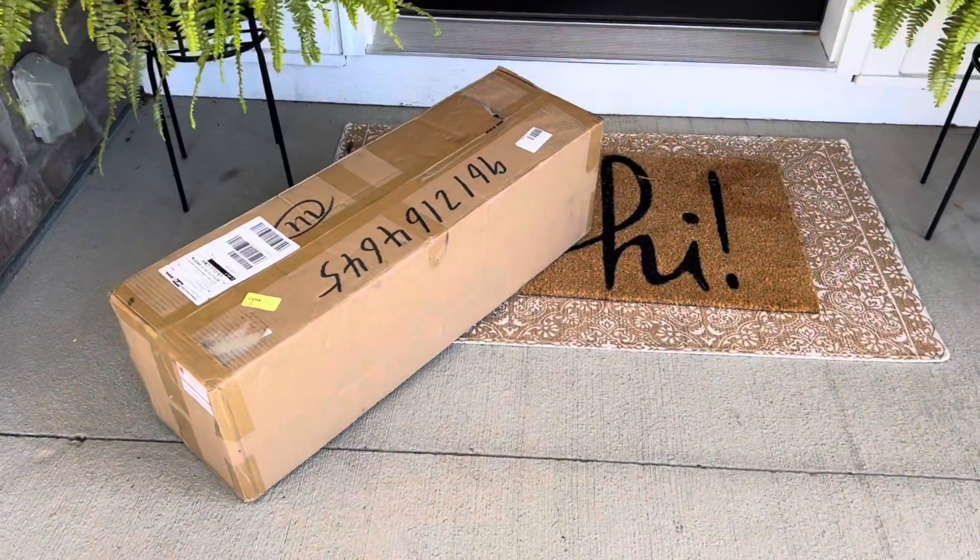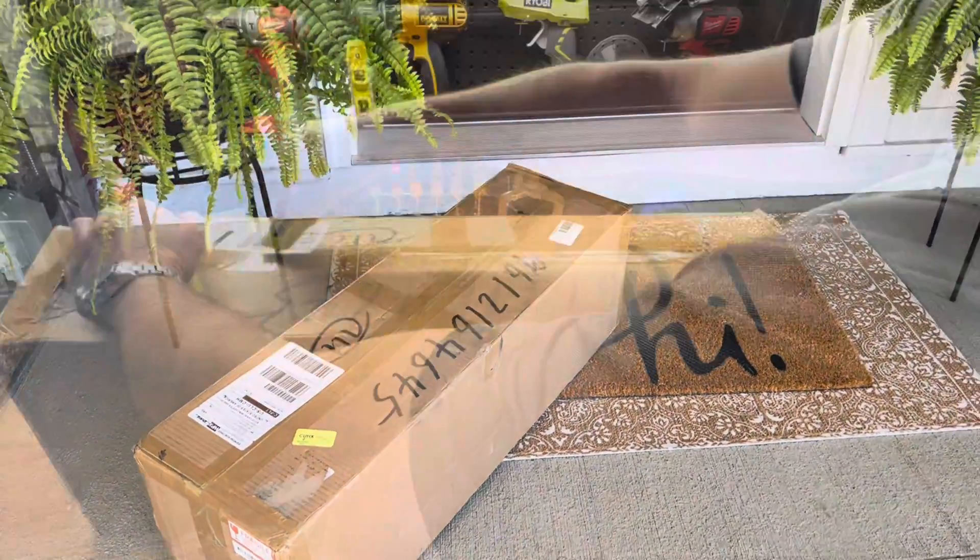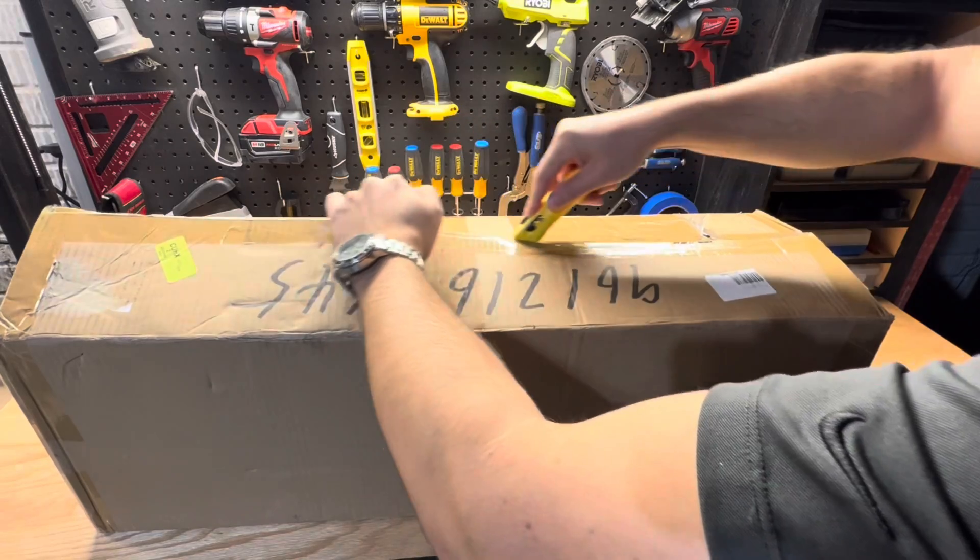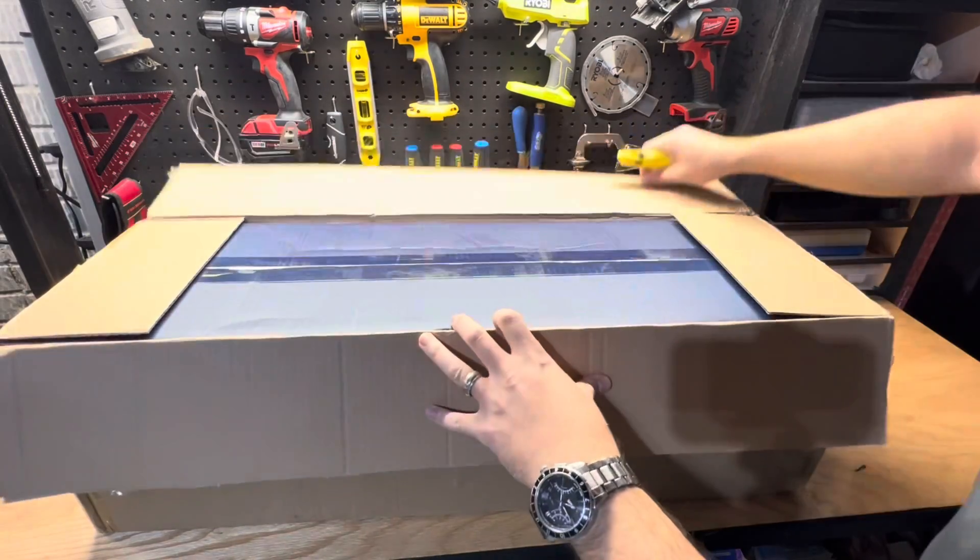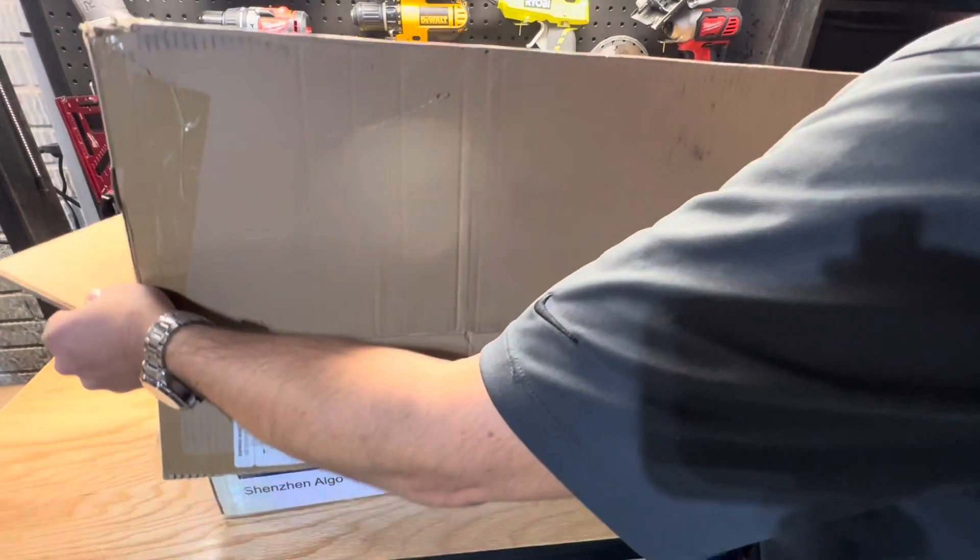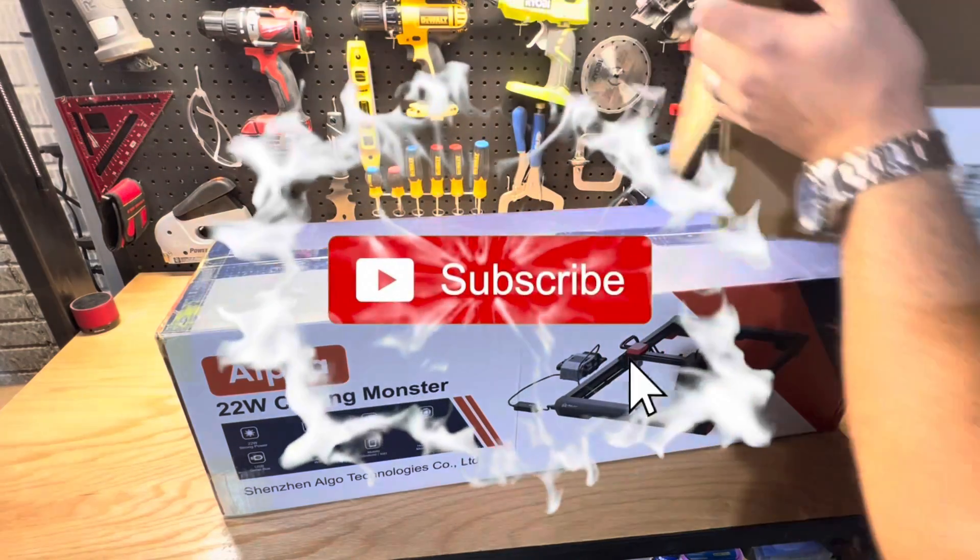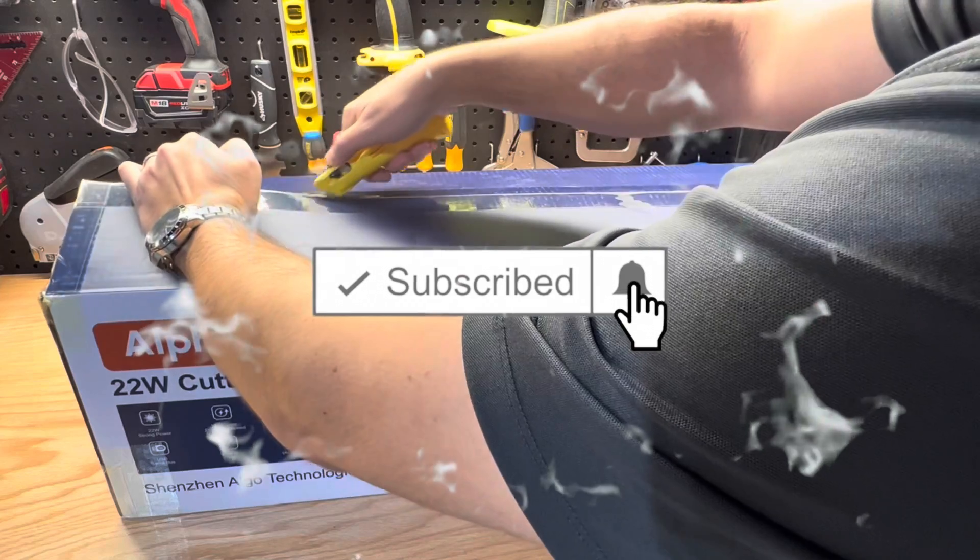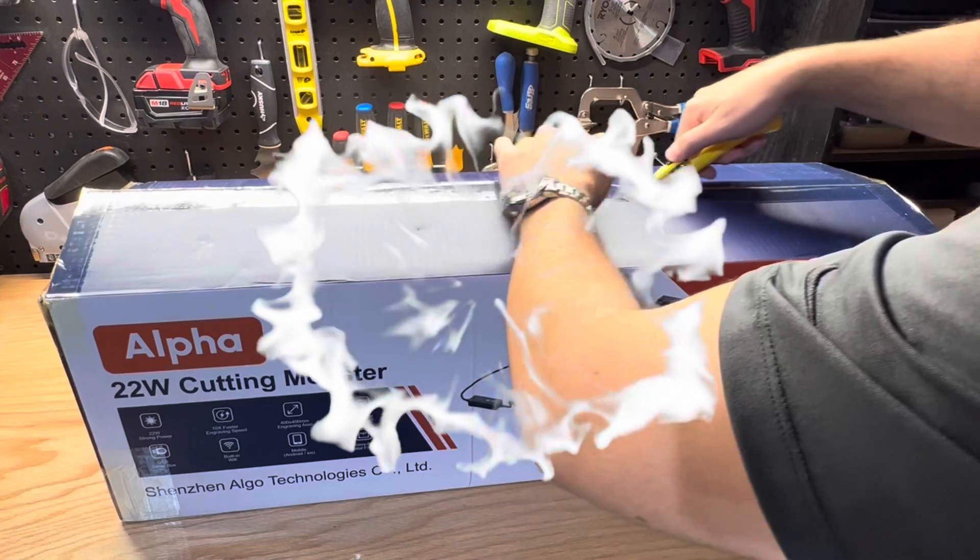This is the 22 watt alpha laser engraver from Algo Laser, who is a newer company who shipped this machine to me so more people can learn about them and see for yourself how awesome their engravers are. If you're new here please make sure to hit that subscribe button and turn on those bell notifications so you don't miss any of these tutorials.